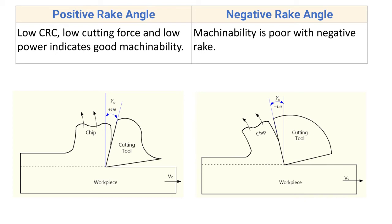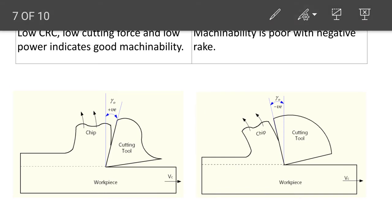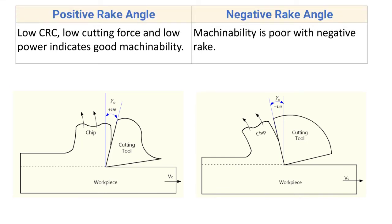For negative rake angle, machinability is poor. With negative rake angle, the tool tip is not as sharp, hence more forces are required, more power is needed to remove the material, and the CRC is also high. So machinability is poor for negative rake angle.